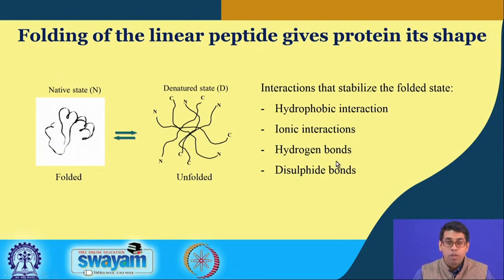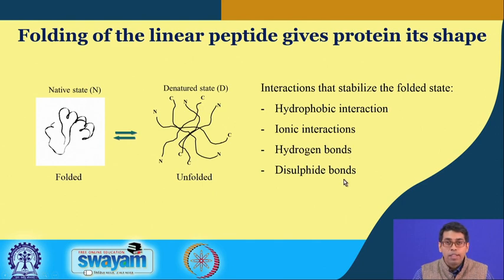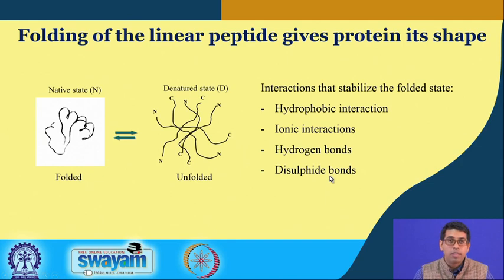The third important interaction is the formation of hydrogen bonds — a dipole-dipole interaction. A very good example is hydrogen bond formation between NH groups and CO groups, where CO is the carbonyl group and NH is the amide group. These three interactions are all non-covalent. One covalent interaction also seen frequently in proteins is the formation of disulfide bonds, which occurs when cysteine amino acids with SH side chains are close enough to form a disulfide linkage. Formation of a disulfide bond can tremendously increase the stability of a protein.